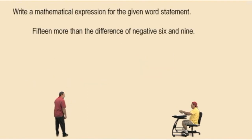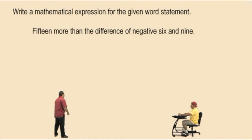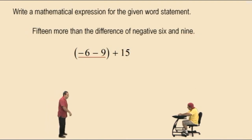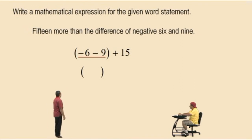Let's write a mathematical expression for the given word statement: 15 more than the difference of negative 6 and 9. The difference of negative 6 and 9 goes in parentheses, giving us 15 plus (negative 6 subtract 9). Order of operations says do the parenthesis first: negative 6 subtract 9 is the same as negative 6 plus a negative 9. What's the answer, Charlie? Negative 15.